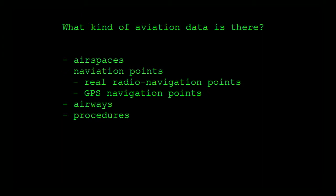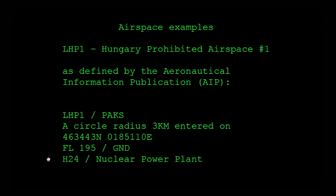When it comes to aviation nav data, what kind of data do we have? We have airspaces, we have navigation points — which are sometimes real navigation points with a physical radio transmitter on the ground. Sometimes you have GPS navigation points which are totally made up, with no physical corresponding item on the ground. We have airways, which are paths that you fly through, and then we have procedures, which are a series of navigation points that you have to follow.